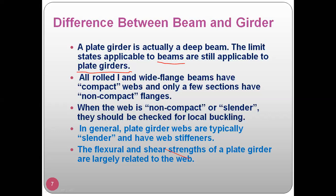All rolled I and wide flange beams have compact webs and only a few sections have non-compact flanges. You already know what compact and non-compact sections mean — they are classes of beams. When considering wide flange beams with compact webs, the webs undergo plastic analysis under permanent deformations, while non-compact flanges undergo elastic deformations. When a beam is non-compact or slender, it must be checked for local buckling.